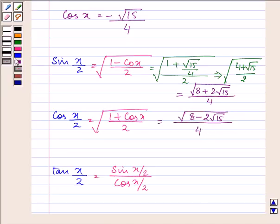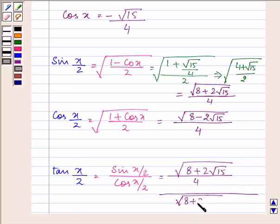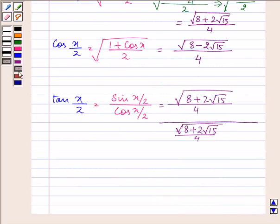And now we have tan x/2 = √(8 + 2√15)/4 divided by √(8 - 2√15)/4. These two 4's will get cancelled out and we can take out √2 common from the numerator and denominator.